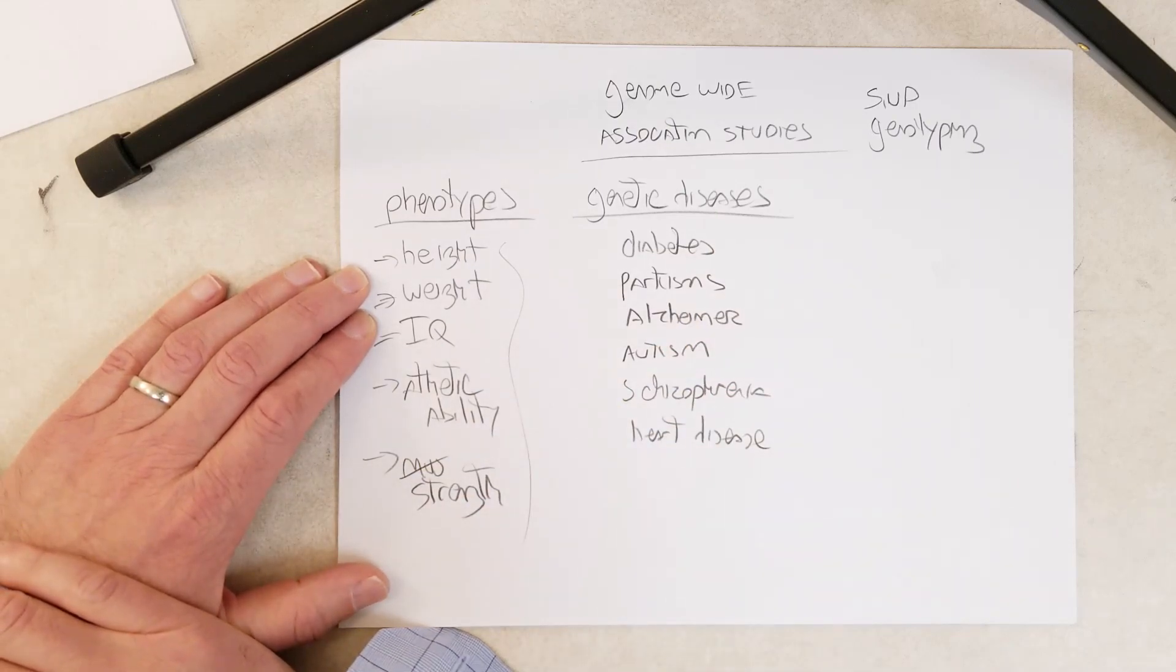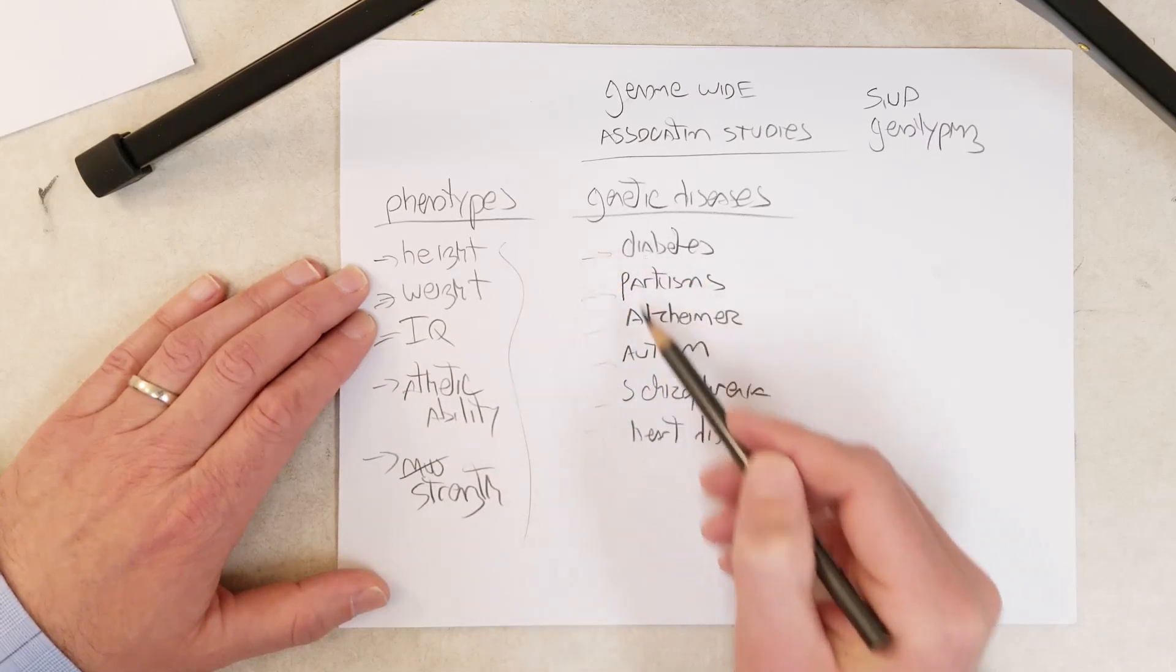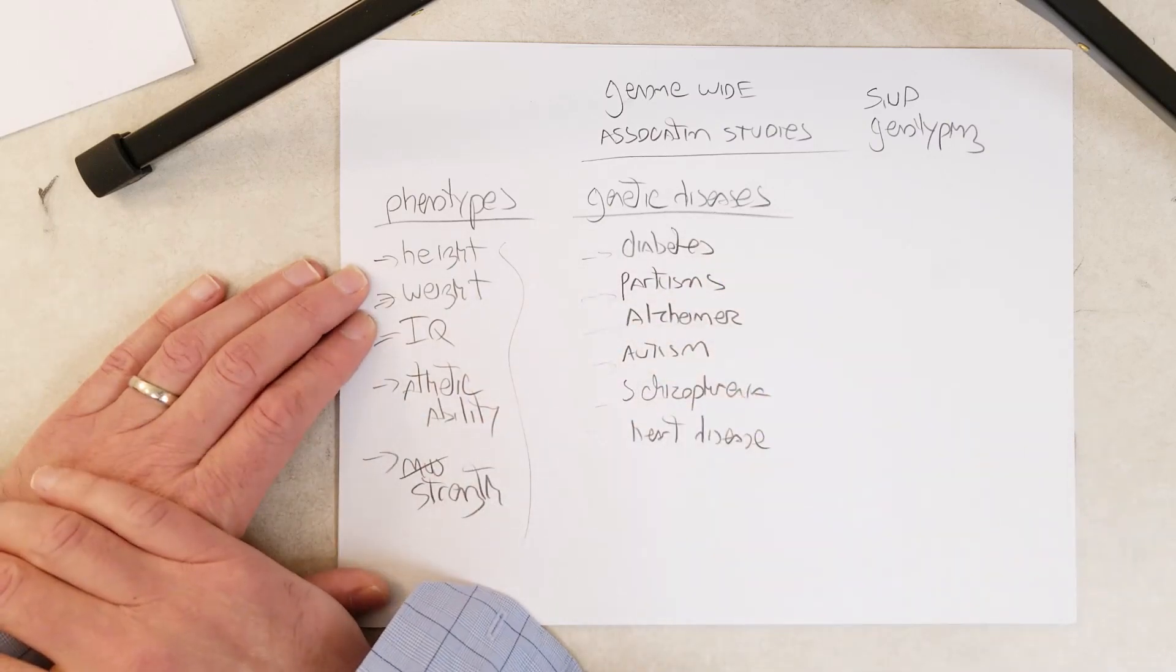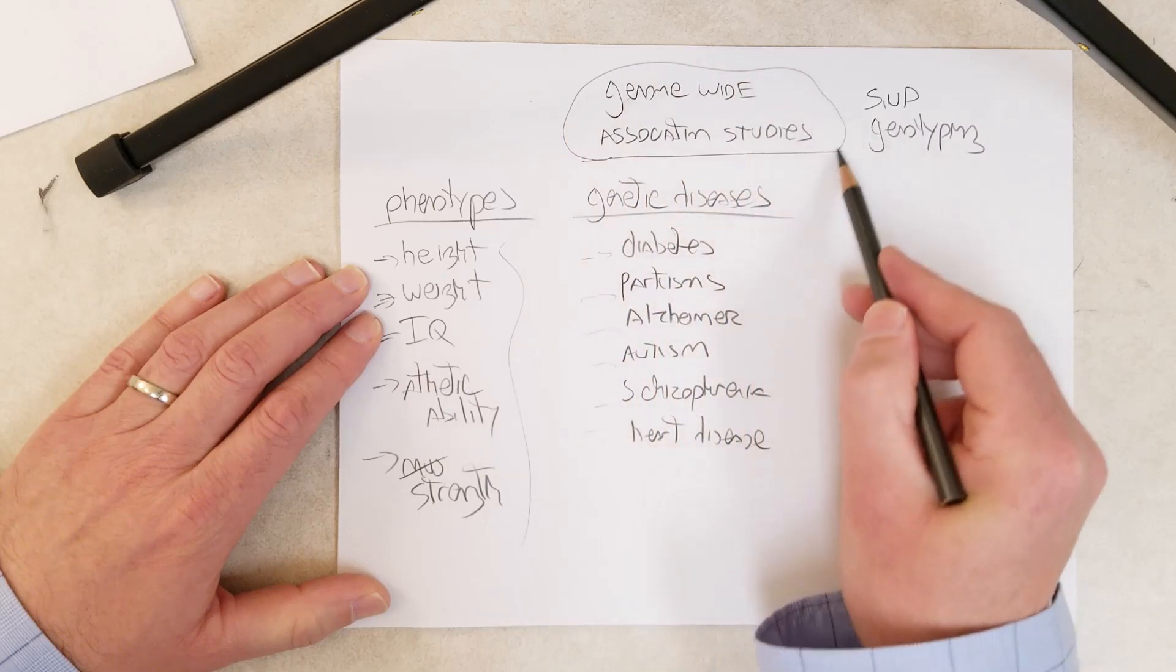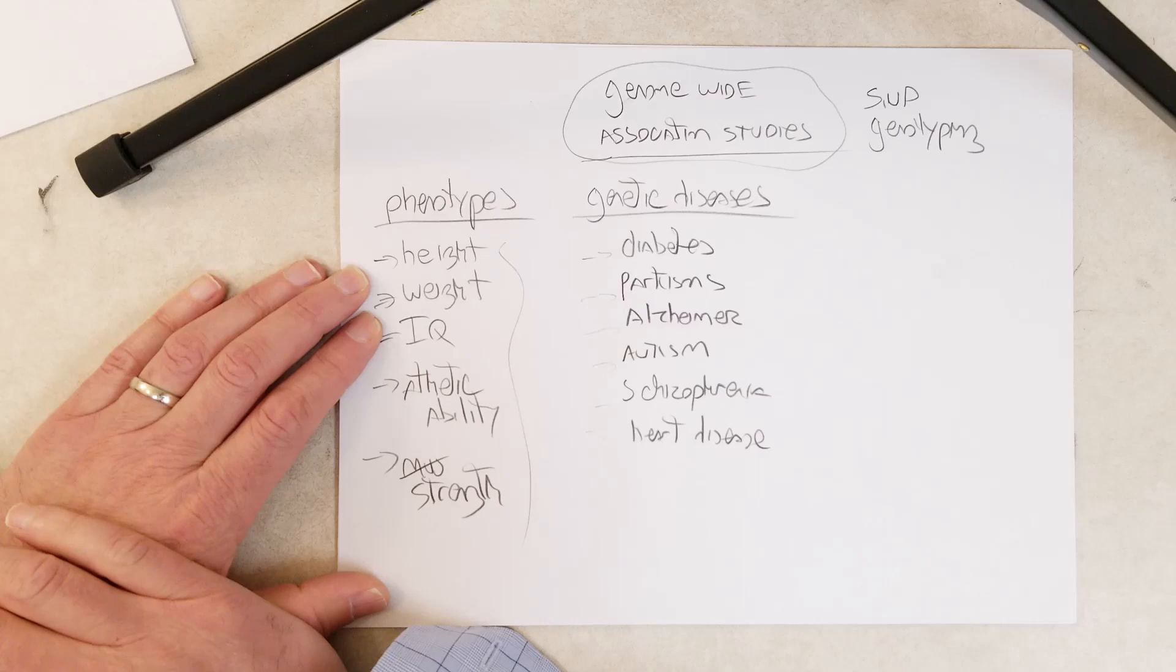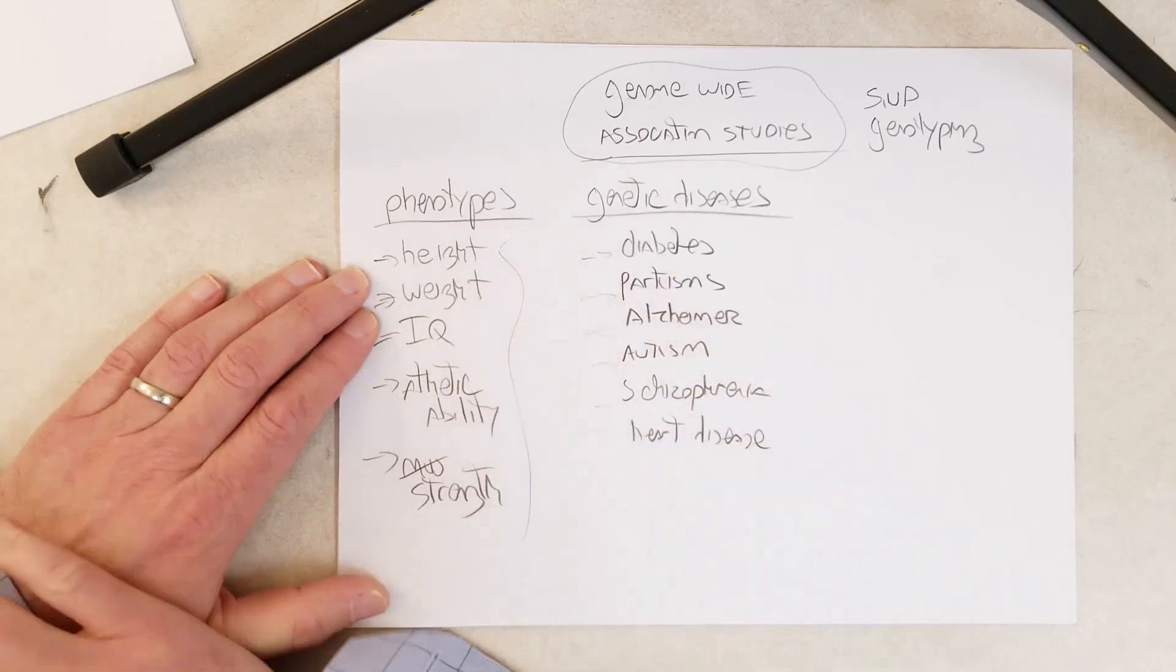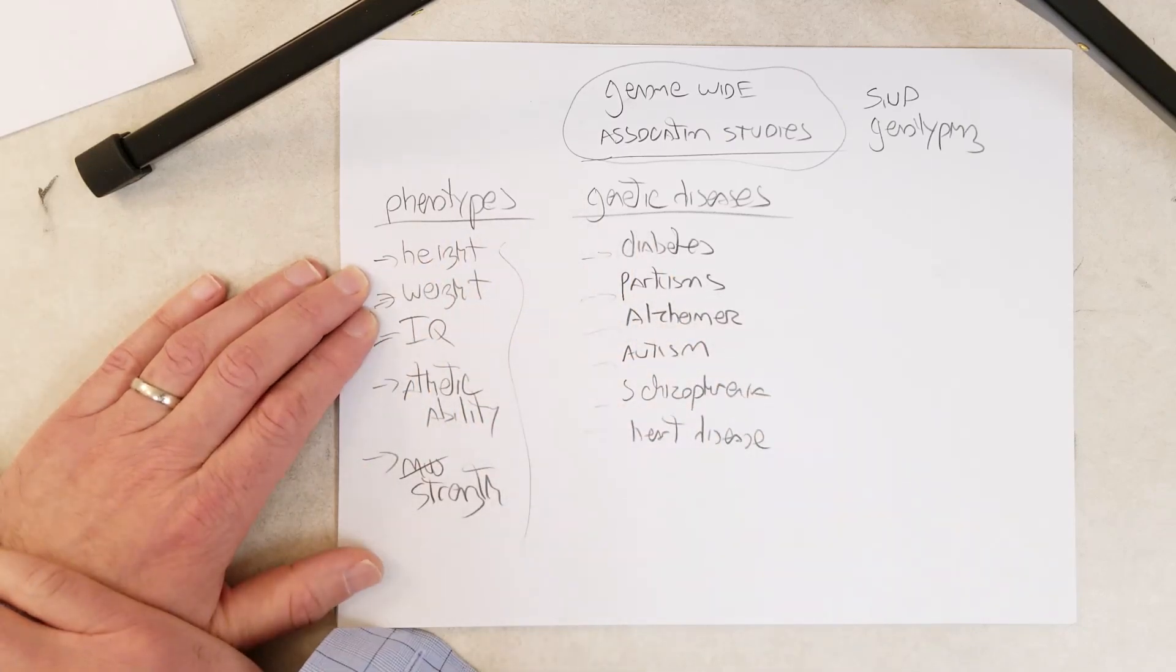So many genes are interacting to contribute to these diseases. It's been really hard to figure out the genetic basis of these things. Essentially, genome-wide association studies are currently providing us with breakthroughs in these areas and getting us a significant step closer to understanding these complex phenotypes and complex genetic diseases - complex meaning controlled by several or many different genes in the human genome.